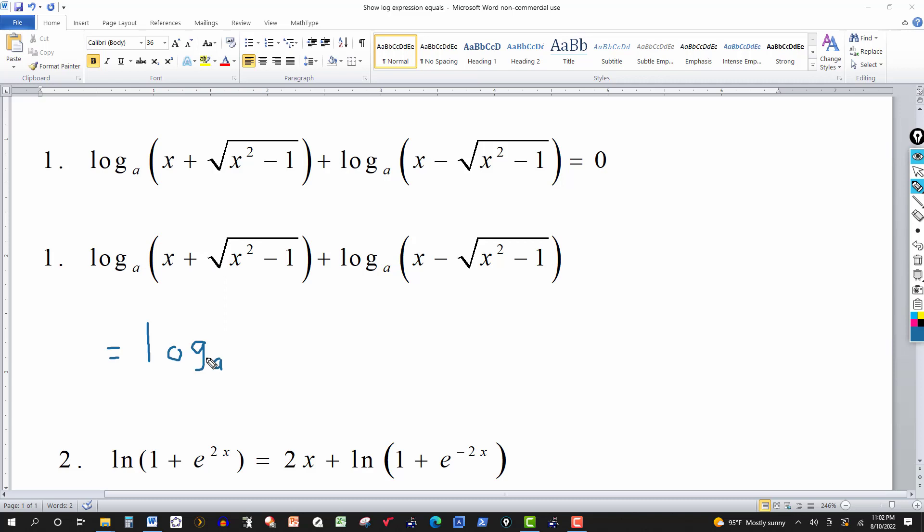So this would be the log of this expression times this expression right here. So this is going to be, this is like a plus b and a minus b. I multiply those out, it's a squared minus b squared. So in this case, the first term is x, so that would be x squared. And it's minus,